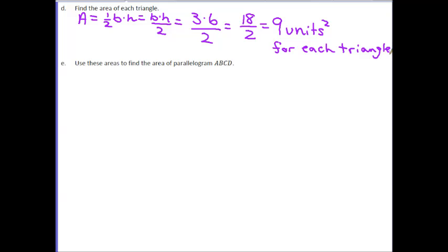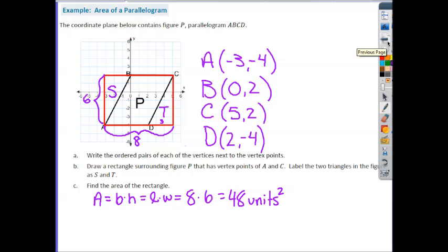Now, if you weren't sure that each of the triangles were the same, let's go back and take a look at the base and height of triangle S. So notice the base here has a length of 1, 2, 3, and also a height of 6. So we get the same area for both S and T.